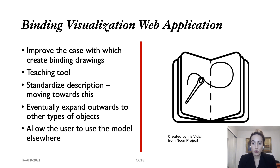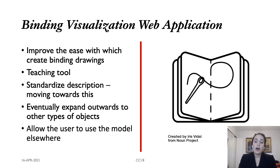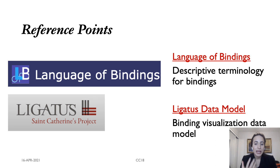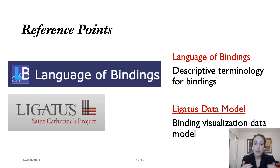Today I'd like to discuss one aspect of the technical team's work: the development of a web application to visualize binding structures in a 3D space. Our hope is that through this work we can improve the ease with which users can create binding drawings, provide a helpful teaching tool, move towards standardizing description of bindings, expand beyond codices to other types of books, and allow users to use their models in other platforms. Our reference points centered around the Legatus data model to get an idea of the types of information that can be recorded about a bookbinding structure and how those pieces might relate to one another, while the language of binding vocabulary was used to help standardize descriptions of these objects.